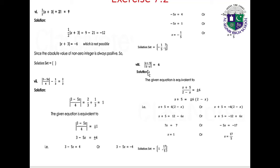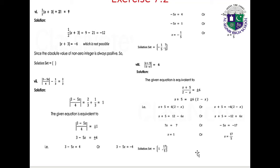Part 8: |(x plus 5)/(2 minus x)| equals 6. The equation is equivalent to (x plus 5)/(2 minus x) equals 6 or (x plus 5)/(2 minus x) equals minus 6. From the first: x plus 5 equals 12 minus 6x, giving 7x equals 7, so x equals 1. From the second: x plus 5 equals minus 12 plus 6x, giving minus 5x equals minus 17, so x equals 17/5. Solution set: {1, 17/5}.